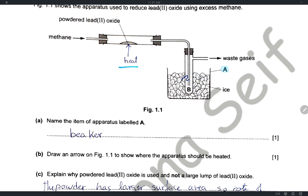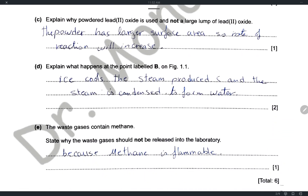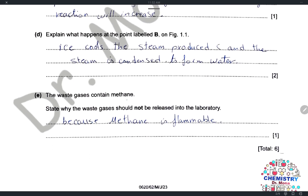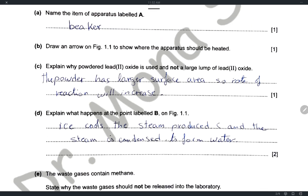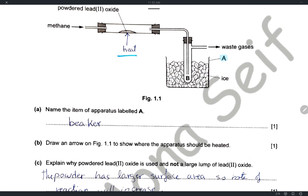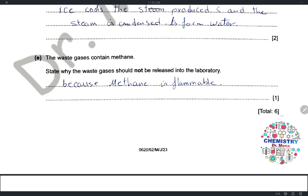The steam condenses to form water at point B. The ice cools the steam and it condenses to form water. The waste gases contain methane. Methane should not be released into the laboratory because it is a flammable gas — it may catch fire in the laboratory.